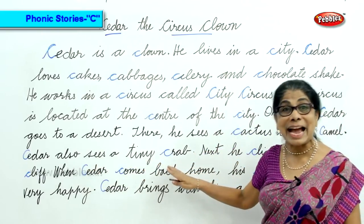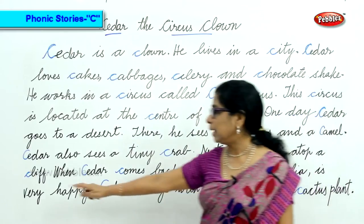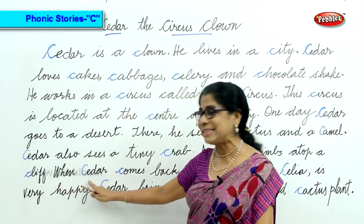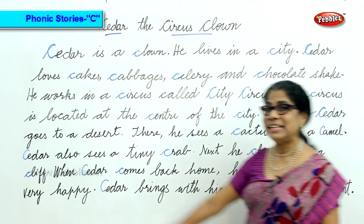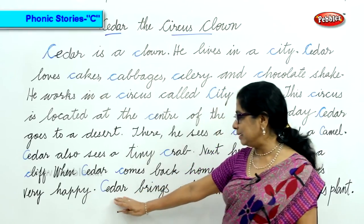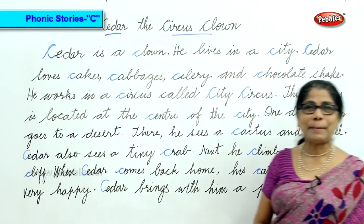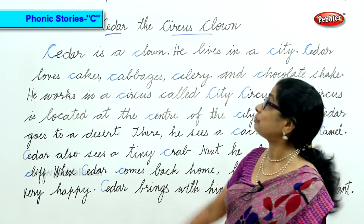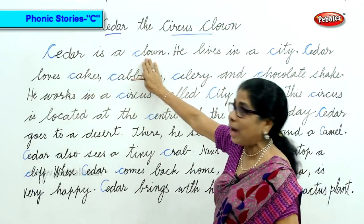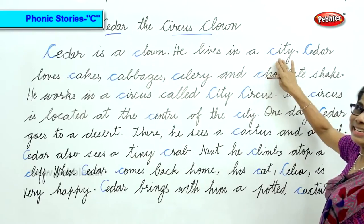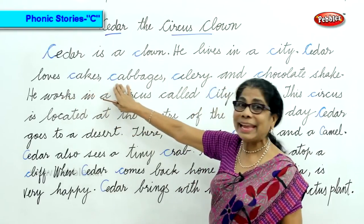One day Cedar goes to a desert. There he sees a cactus and a camel. Cedar also sees a tiny crab. The next day he climbs atop a cliff. When Cedar comes back home, his cat Selena is very happy. Cedar brings with him a spotted cactus plant.